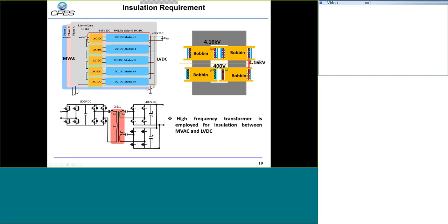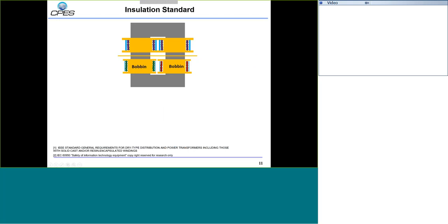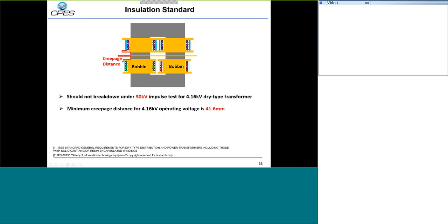Between the secondary-side winding and the bobbin, since the secondary side only stays at low-voltage DC 400 volt, we only need to satisfy 400-volt insulation requirements there. Based on these insulation requirements and following IEEE standards, if we use 4.6 kV as input voltage with a dry-type transformer, the transformer must withstand 30 kV — passing the 30 kV impulse test. According to the IEEE standard for this 4.6 kV application, the minimum creepage distance should be 41.6 millimeters.